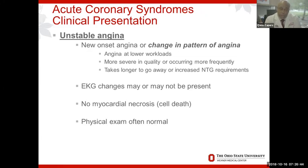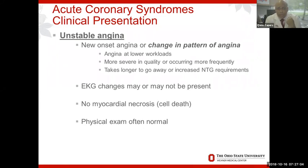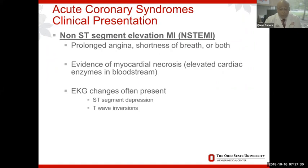Unstable angina is a change in the pattern of angina. The patient who gets chest discomfort every time they walk 300 yards but has been that way for two years — now they're getting chest discomfort at 100 yards, or having to take two or three sublingual nitroglycerins instead of one. That change in pattern is why we call it unstable angina, and those patients are at higher risk to go on to a heart attack. Those who have a sudden change and go on to actual myocardial cell death, but whose ST segment on the EKG is either normal or depressed, are said to have a non-ST-segment elevation myocardial infarction.